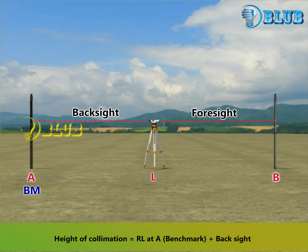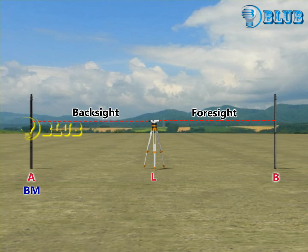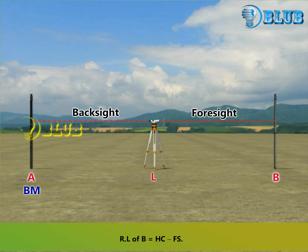Height of collimation is equal to the reduced level at A — that is, the benchmark — plus the back sight. The RL of B is equal to the height of collimation minus the foresight.